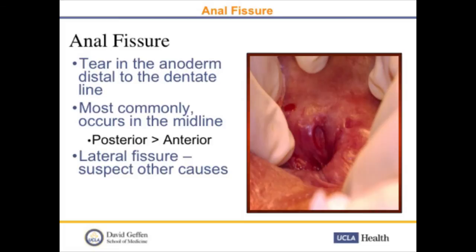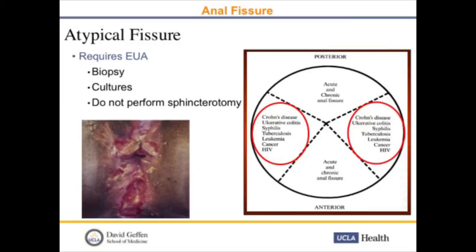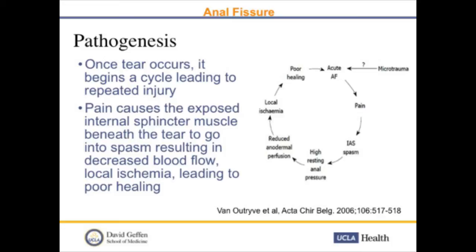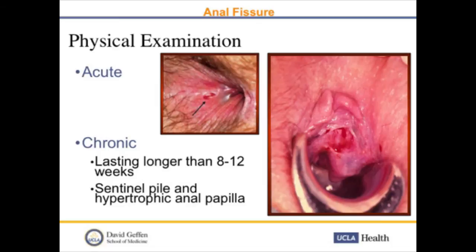Moving on to anal fissure. The anal fissure is a tear in the anal derm, distal to the dentate line, and most commonly occurs in the midline — posterior tends to be greater than anterior. If there's a lateral fissure, you want to suspect other causes including Crohn's disease, ulcerative colitis, syphilis, tuberculosis, leukemia, cancer, or HIV. Once the tear occurs, it begins a cycle of repeated injury: pain causes the exposed internal sphincter to go into spasm, resulting in decreased blood flow, local ischemia, and poor healing. A chronic fissure shows a sentinel pile and a hypertrophic anal papilla.